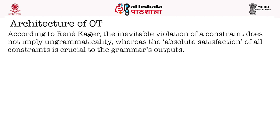According to Kager, the inevitable violation of a constraint does not imply ungrammaticality, whereas the absolute satisfaction of all constraints is crucial to the grammar's outputs. Moving on to the architecture of OT, we have LEX, GEN, EVAL, and CON. LEX stands for lexicon, GEN for the generator, EVAL for the evaluator, and CON for the constraints.